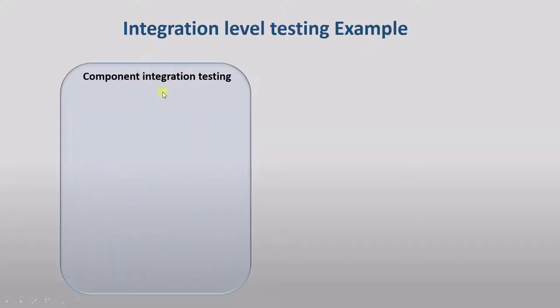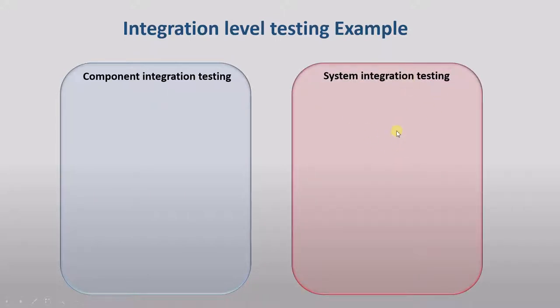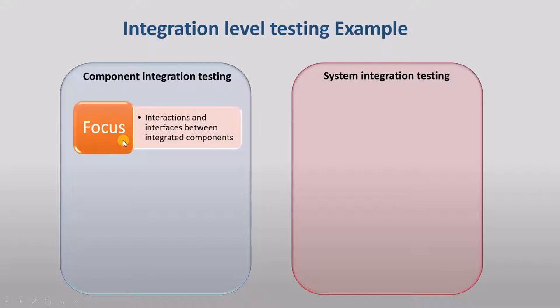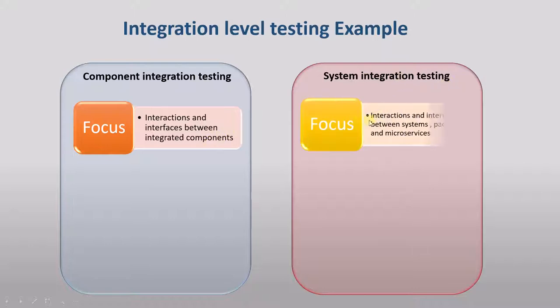Now let's take a look at the levels of integration testing. The first level is component integration testing. The second level is system integration testing. Component integration testing focuses on interactions and interfaces between integrated components — we check interactions between two individual components. In system integration testing, you check interactions and interfaces between systems, packages, and microservices.